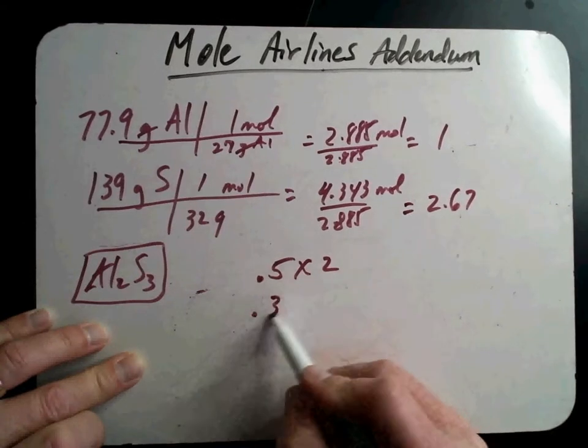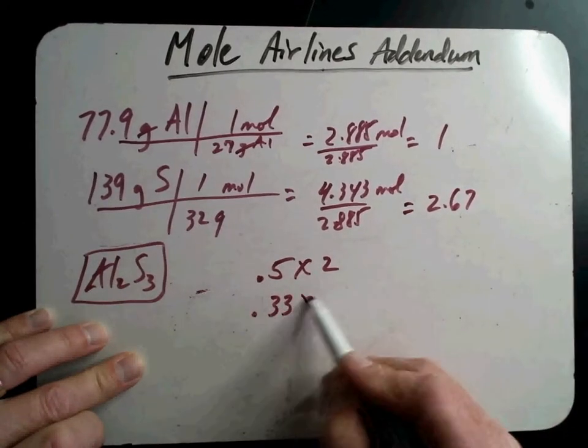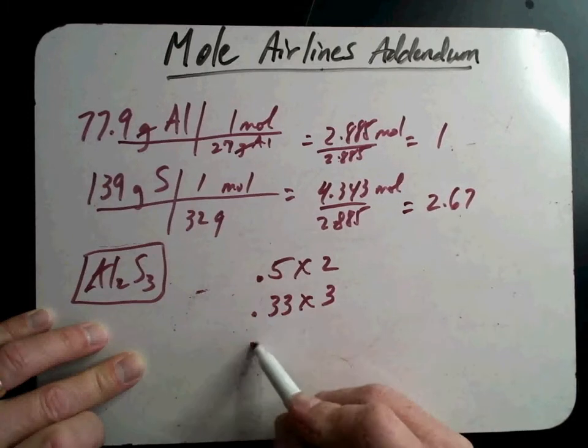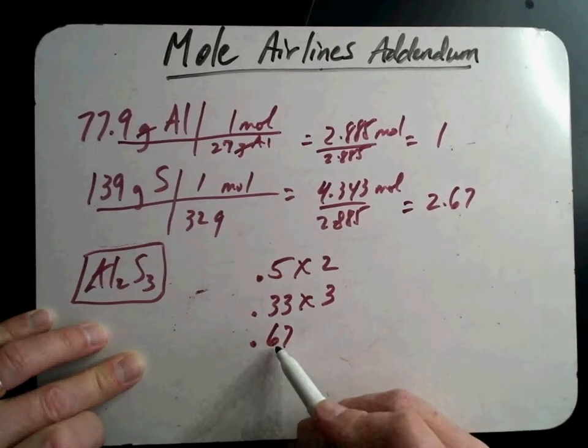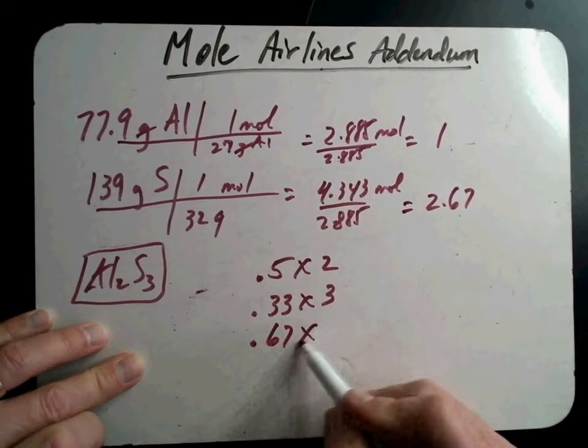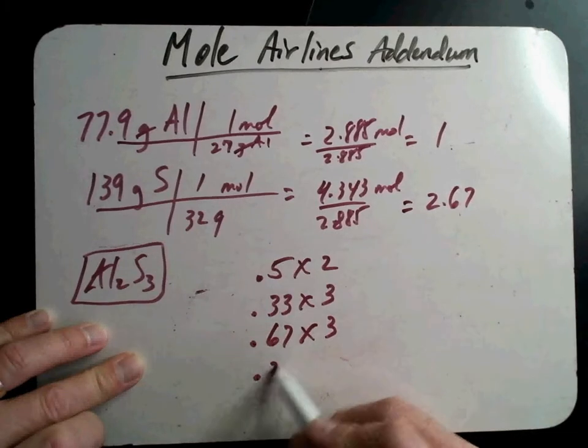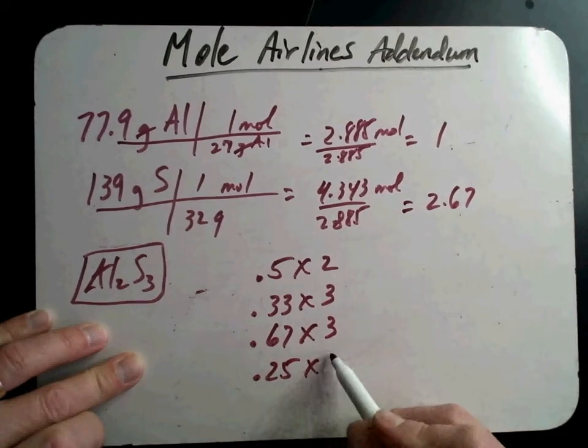If you get a 0.3 or a 0.33, you're going to multiply everything by 3 because that's the decimal for a third. 0.67 or 0.6 is the same as 2 thirds, so you would multiply by 3. Or if you get 0.25, you're going to multiply by 4.